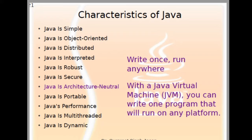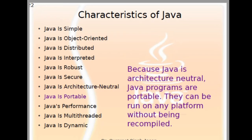Java is architecturally neutral. Java needs interpreters to run programs, and because of Java bytecode, Java is architecturally neutral — we can say write once, run anywhere. With a Java Virtual Machine, you can write one program that will run on any platform. Because of this, Java is also portable — Java programs can run on any platform without being recompiled.